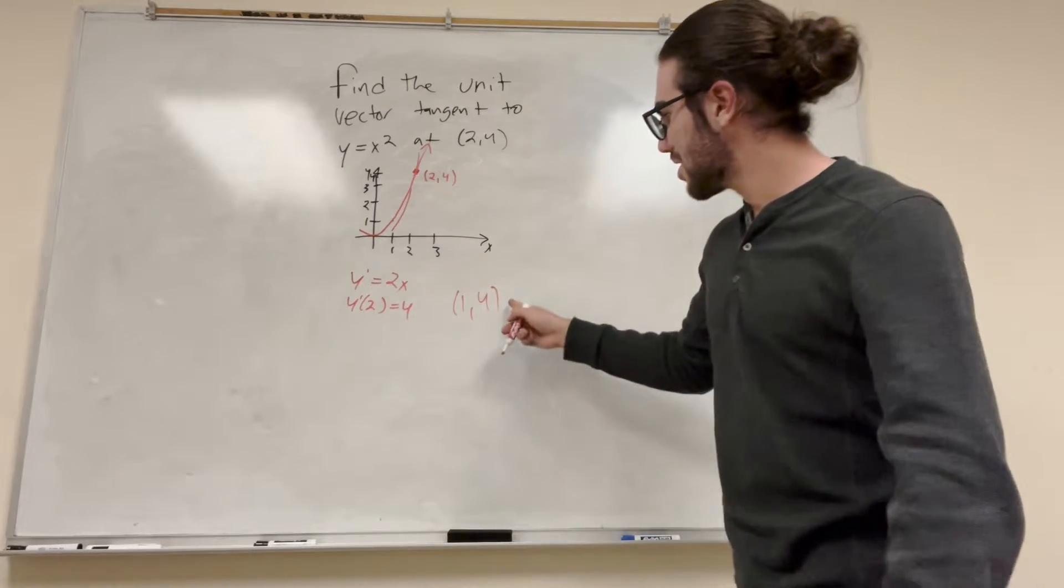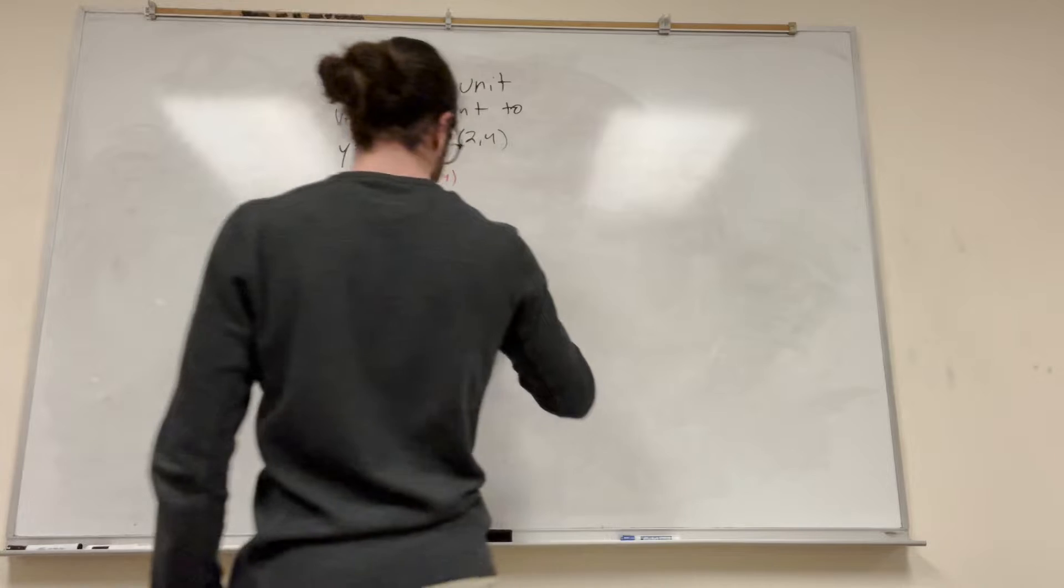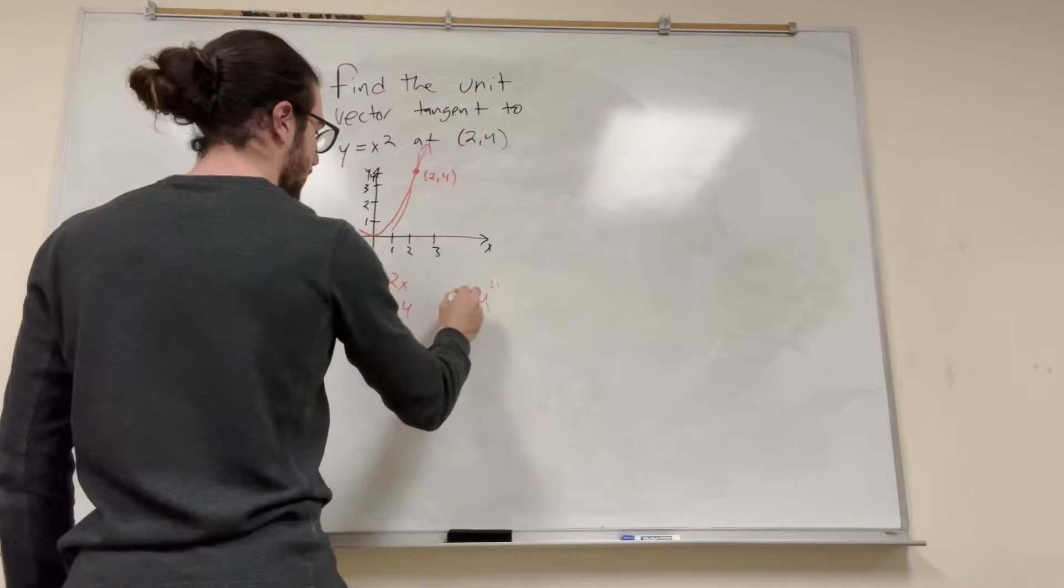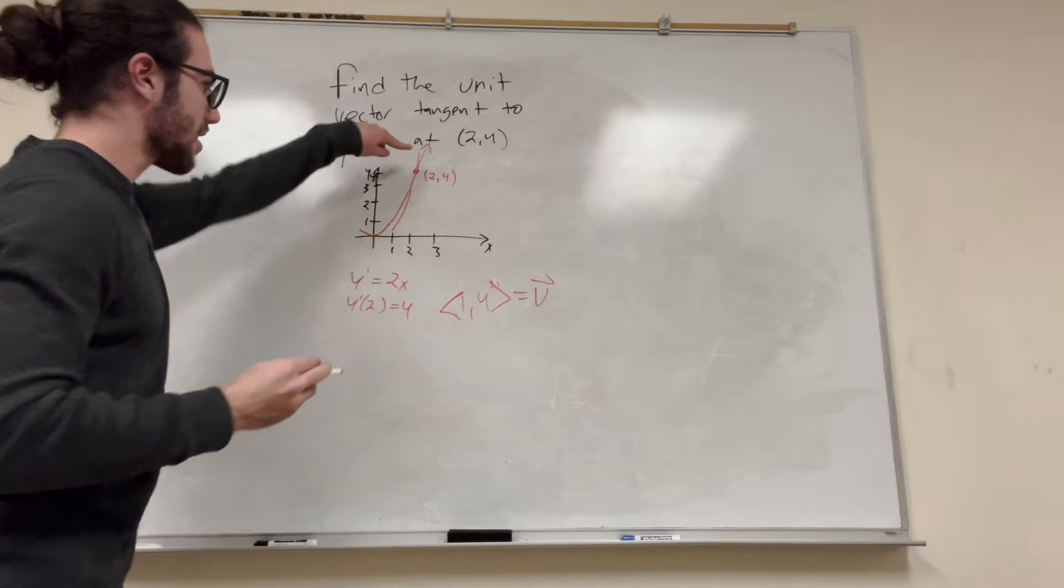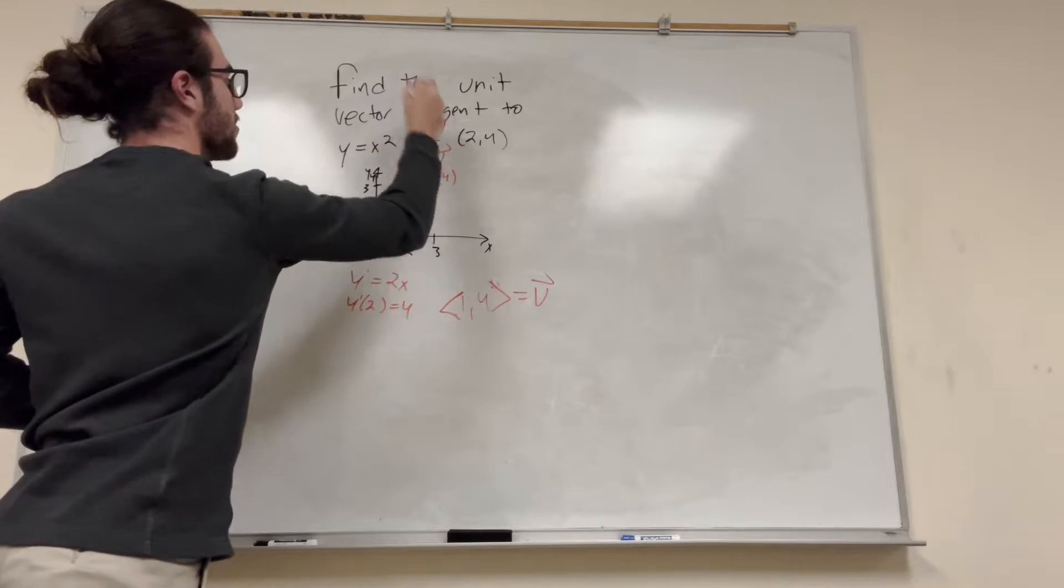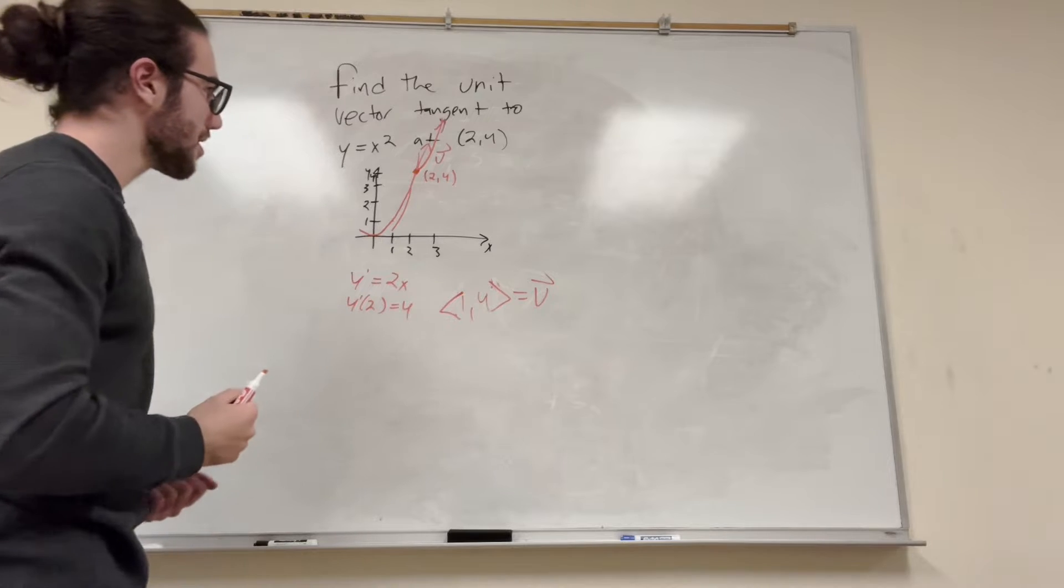And what we got is we just found a vector. Watch this, guys. Vector. That's equal to our vector, right? This is the equation of this, basically. If this was a vector, boom, we got a vector. It's pretty cool.